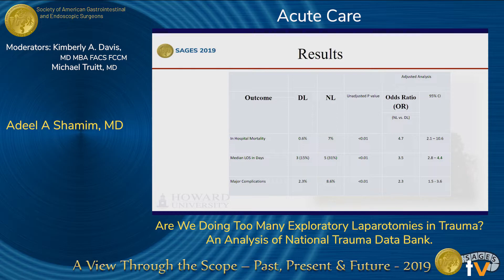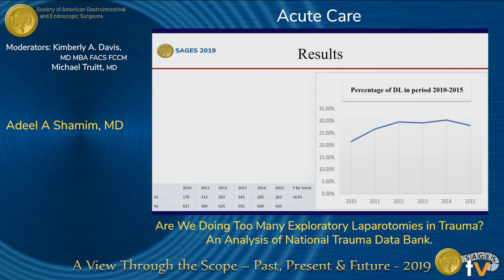Looking at outcomes, the NL group had higher mortality, longer length of stay, and greater morbidity. On adjusted analysis, it had higher odds ratios for length of stay, morbidity, and mortality as well. We also looked at trends of DL performed in all non-therapeutic explorations, and the rate increased from about 21% in 2010 to about 26% in 2015, which was statistically significant.